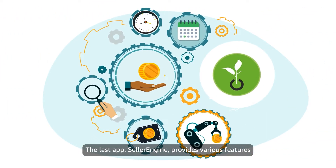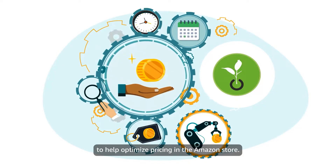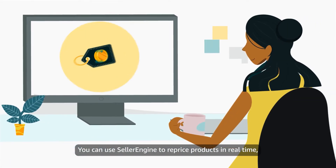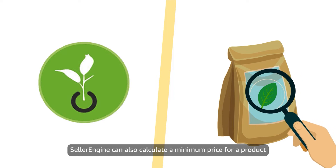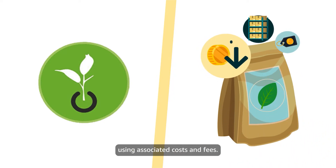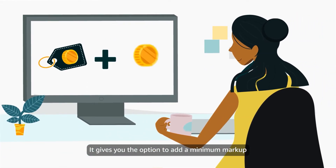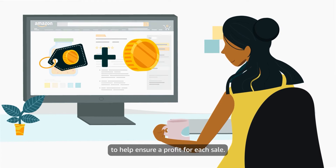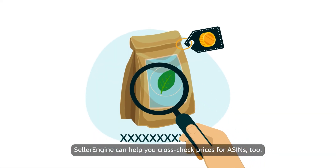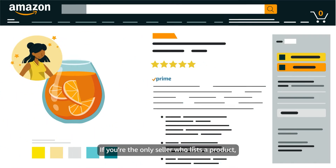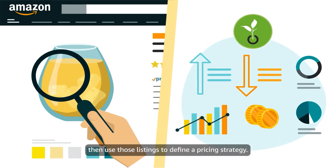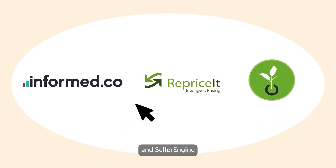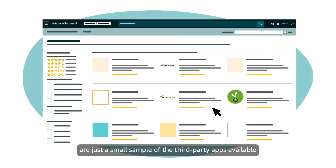The last app, Seller Engine, provides various features to help optimize pricing in the Amazon Store. You can use Seller Engine to reprice products in real-time rather than waiting 10 to 15 minutes. Seller Engine can also calculate a minimum price for a product using associated costs and fees, and gives you the option to add a minimum markup to help ensure a profit for each sale. Seller Engine can help you cross-check prices for ASINs, too. If you're the only seller who lists a product, you can use Seller Engine to find similar listings, then use those listings to define a pricing strategy. Informed.co, Reprice It, and Seller Engine are just a small sample of the third-party apps available in the Selling Partner App Store to help you price products.